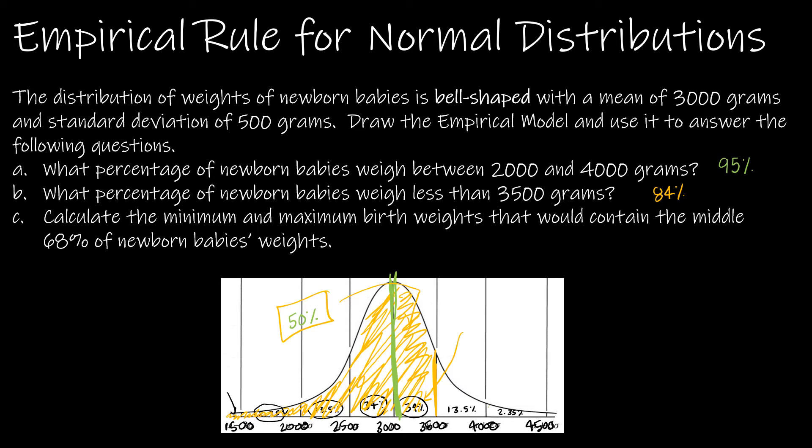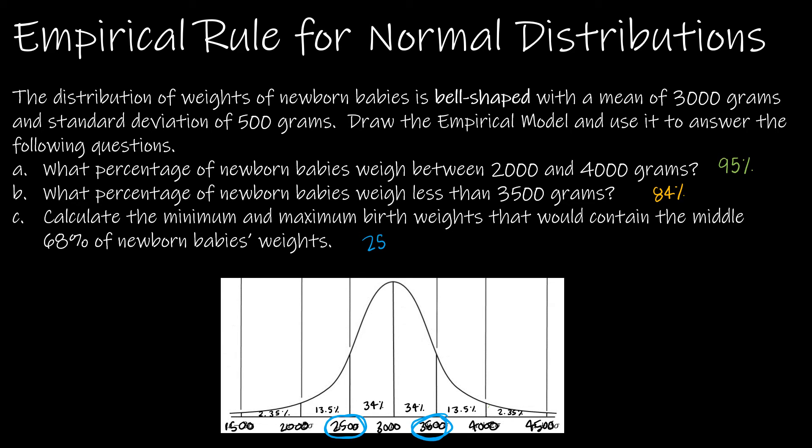Lastly, the minimum and maximum birth weights that would contain the middle 68% of newborn baby's weights. So again, empirical rule says that 68% of values fall within one standard deviation. So all I need to know is what's one standard deviation to the left and what's one standard deviation to the right. So that would be 2500 to 3500 grams.